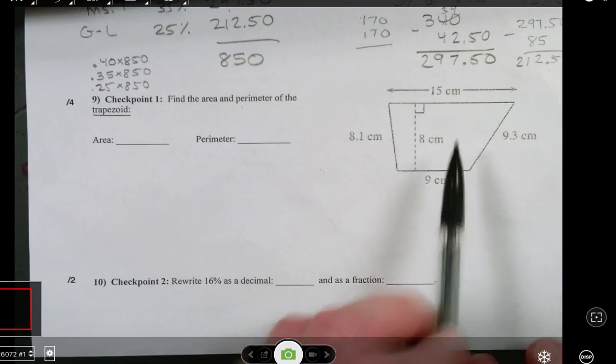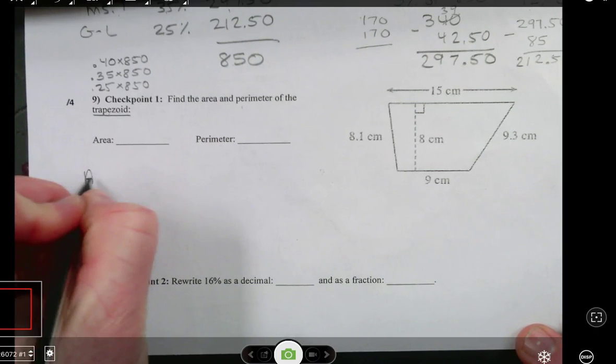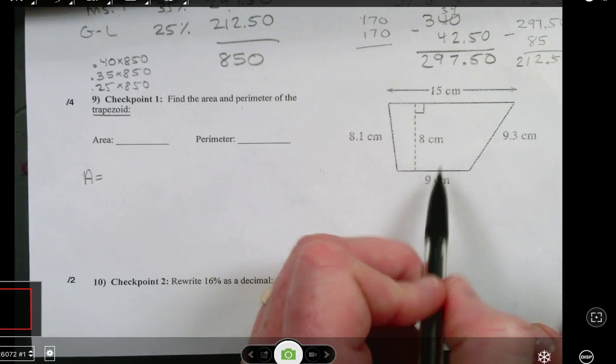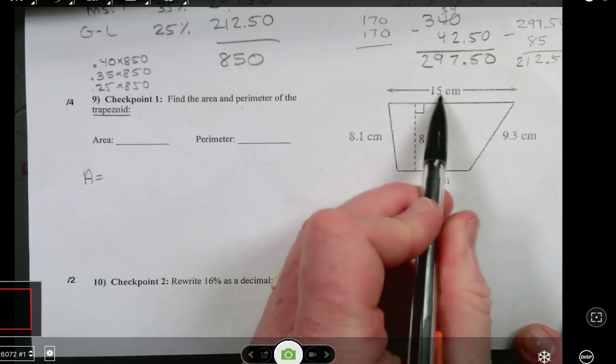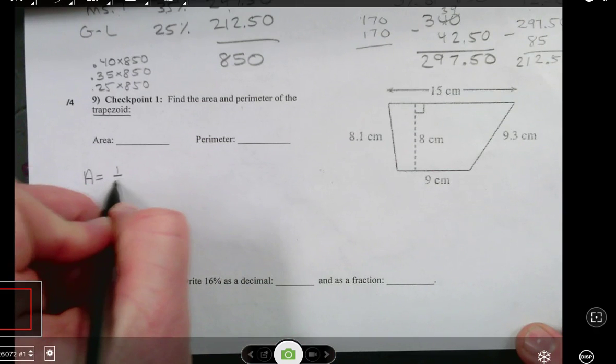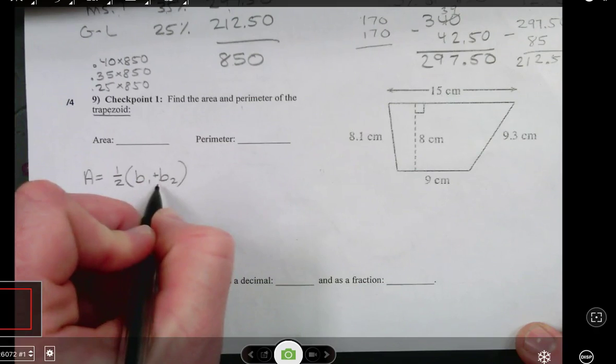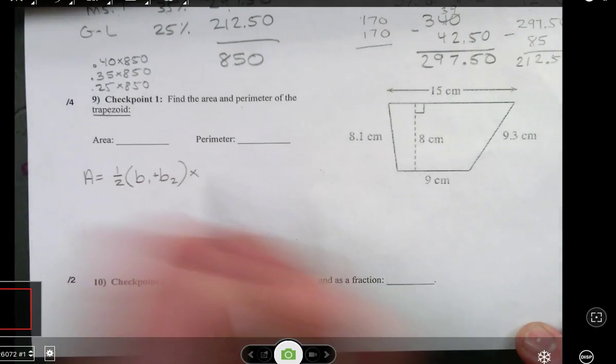So a trapezoid, the area of a trapezoid, we're going to take the average of the bases. So we have to add those together and divide it by 2, or one-half times base 1 plus base 2. We're taking the average of the bases, and then we're going to multiply it by the height.